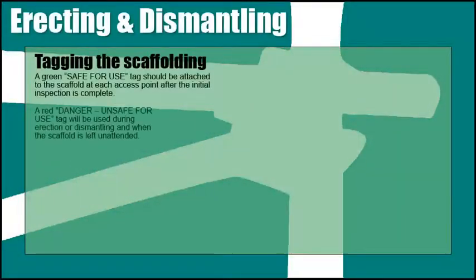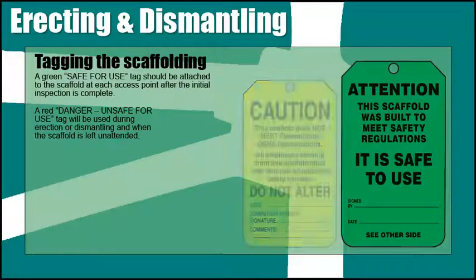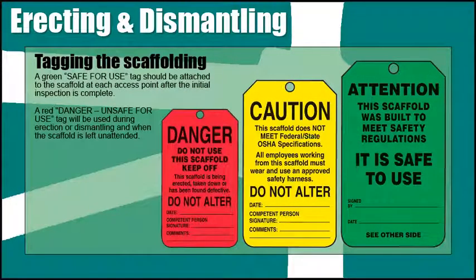Scaffold tags are used to protect the lives of workers, as they identify if a scaffold is safe or unsafe for use. All scaffold identification tags will be of solid green, yellow, or red color with black lettering. This enables the competent person to identify the scaffolds which have been inspected. While this is not an OSHA requirement, it is a good practice used throughout the construction industry.